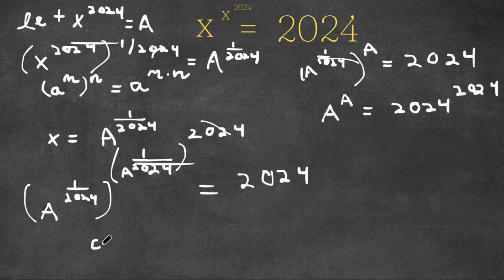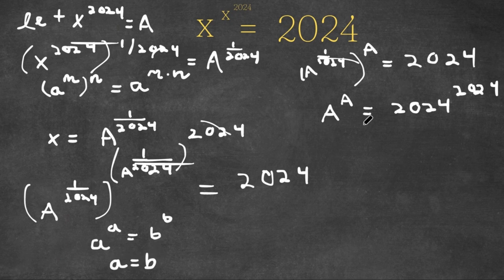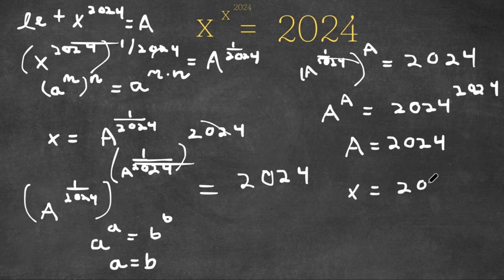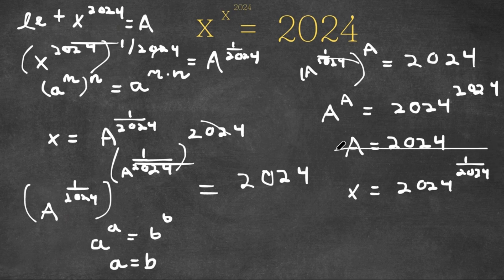Now if we have something in the form a to the power of a is equal to b to the power of b, then this means that a is equal to b. So in this case a is equal to 2024. Although we have a solution, a is not what we're looking for — we're looking for x. As we know, x is equal to 2024 to the power of 1 over 2024. So this is our answer.